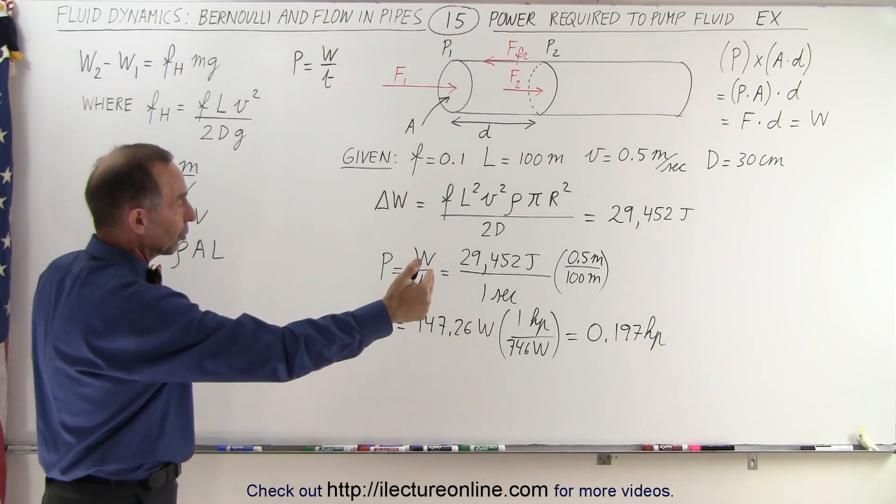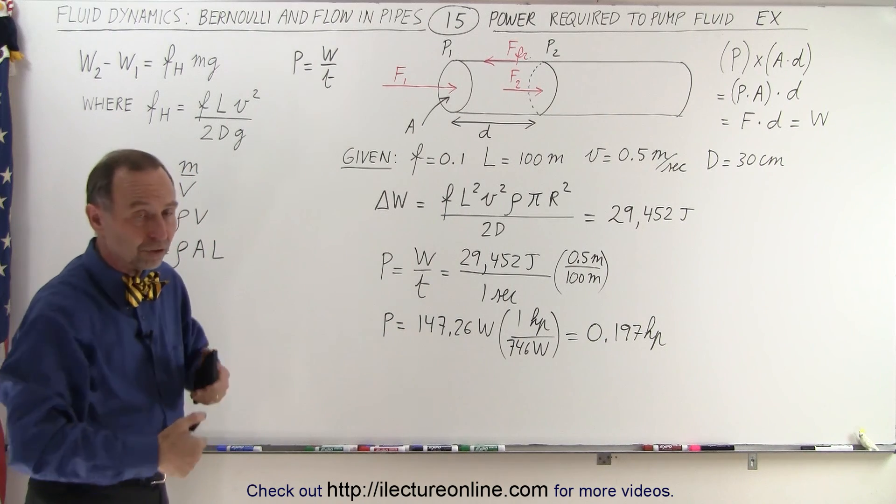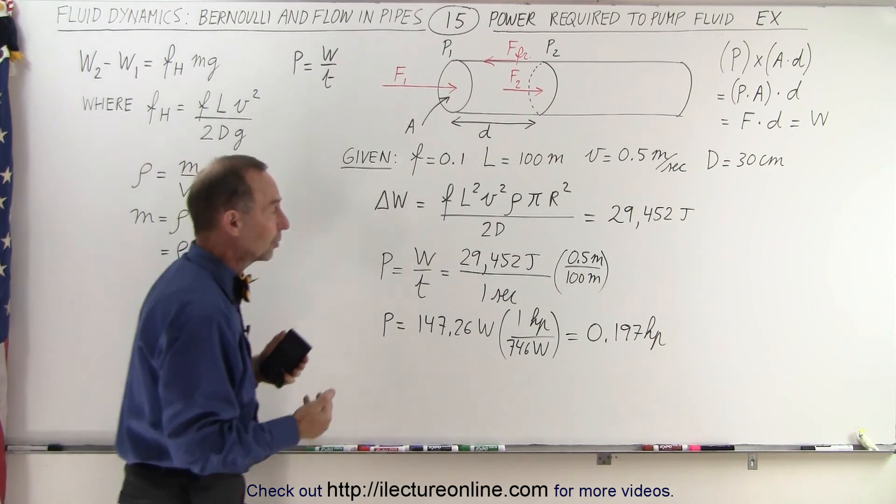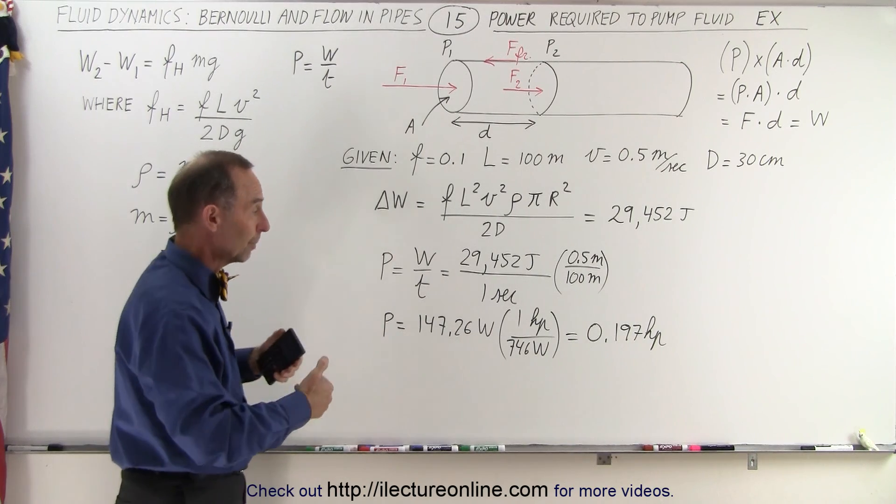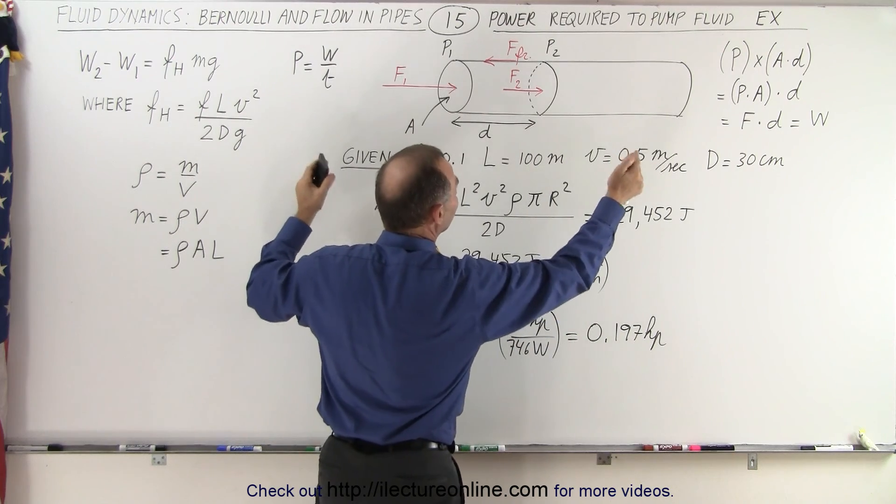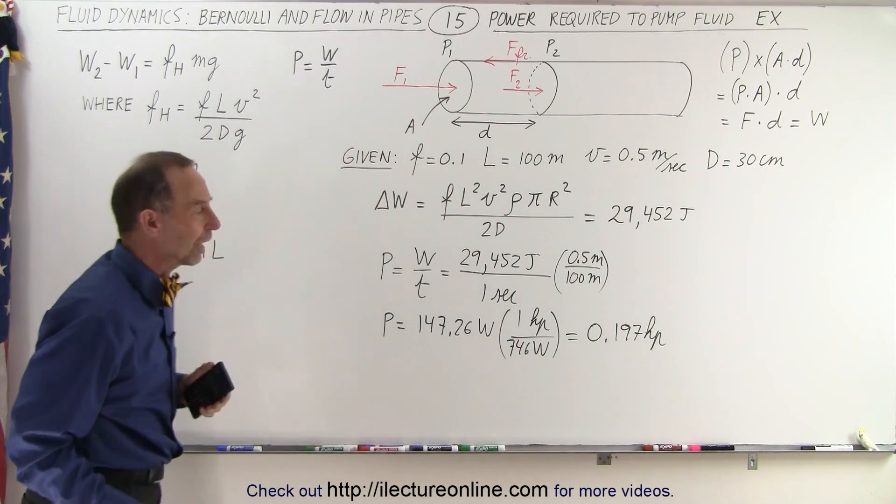If you want to move 1,000 meters of water, it would require 10 times as much. 10,000 meters of water would require 100 times as much. So now we're talking about needing a motor or power input of about 20 horsepower if you're talking about moving 10,000 meters of fluid through that pipe.